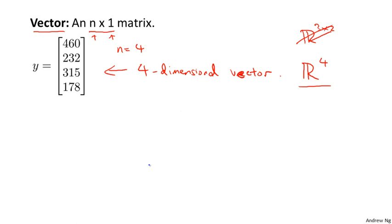Next, let's talk about how to refer to elements of the vector. We're going to use the notation y_i to refer to the ith element of the vector y. So if y is this vector, y subscript i is the ith element. So y_1 is the first element, is equal to 460.